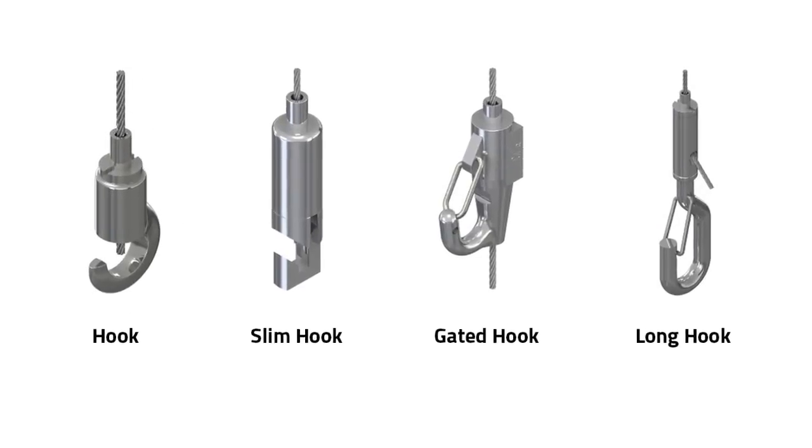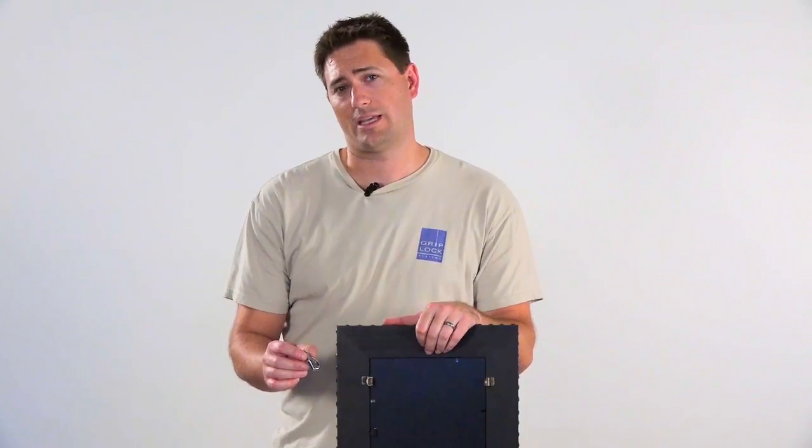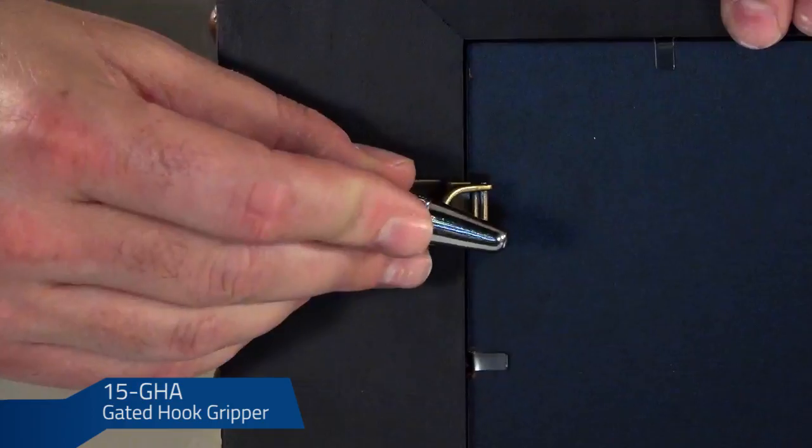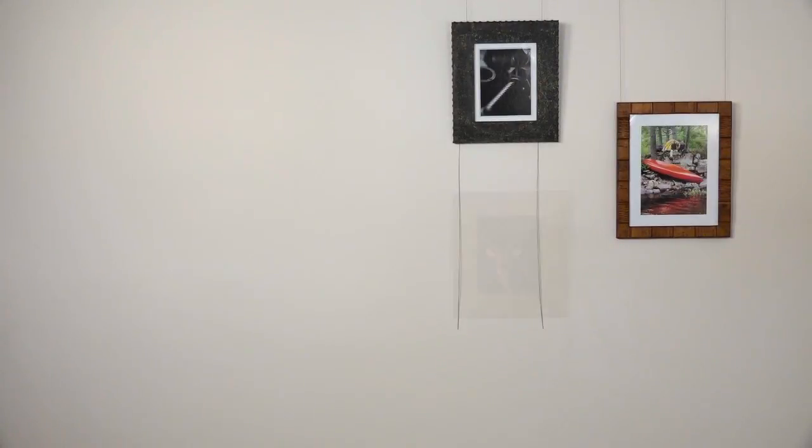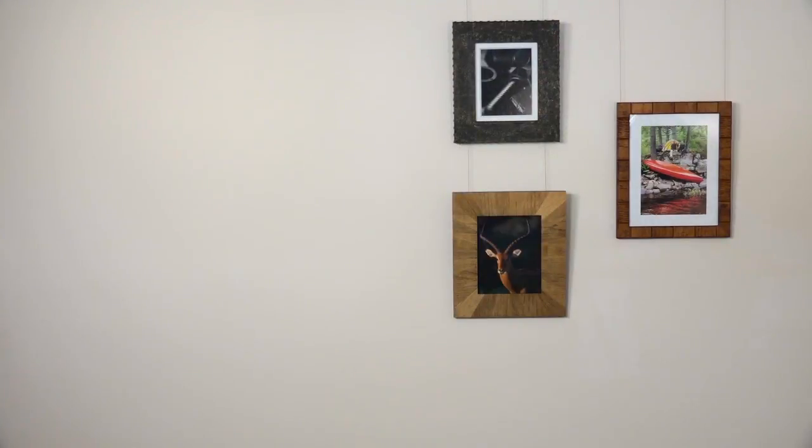If you have an aluminum or wood frame with hanging tabs, you can use any of our hook grippers. Today we're using our 15 GHA gated hook gripper. The snap hook prevents it from becoming unhooked. If you have a picture that is roughly the same width, you can add it to the same cables already hung.